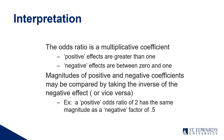To sum up how we interpret this data: the odds ratio is a multiplicative coefficient. Positive effects are greater than one; negative effects are between zero and one. Magnitudes of positive and negative coefficients may be compared by taking the inverse — for example, a positive odds ratio of two has the same magnitude as a negative factor of 0.5. We need to understand what a negative versus positive impact means as a variable to the predictability of the outcome — the probability of something occurring or not.